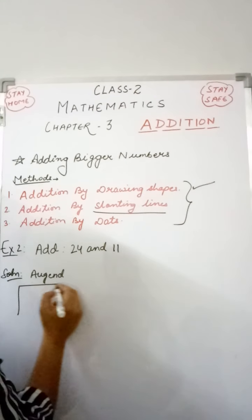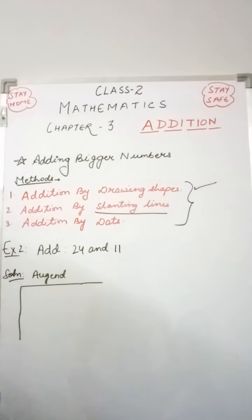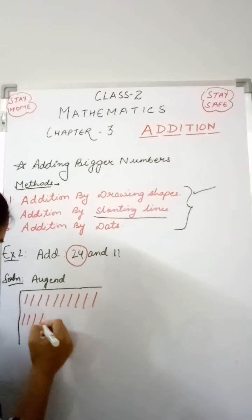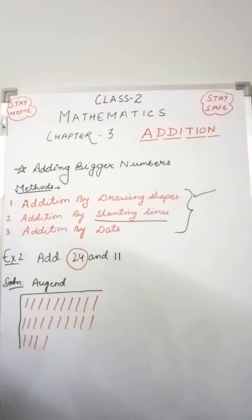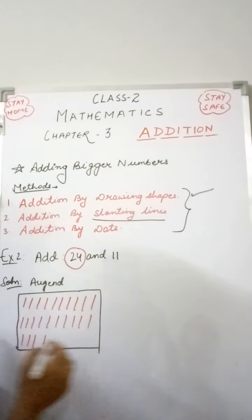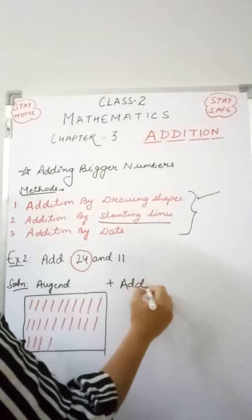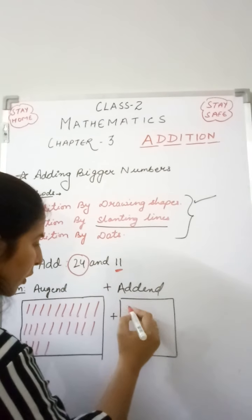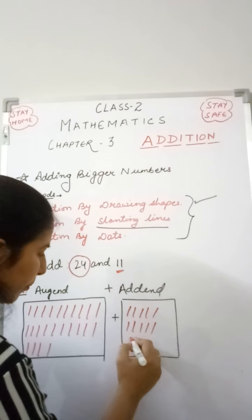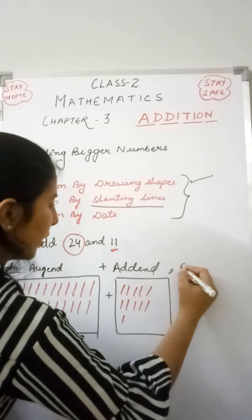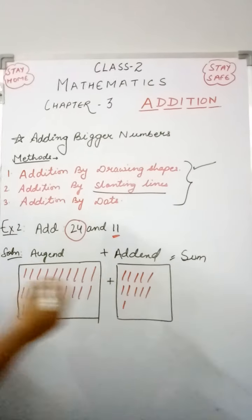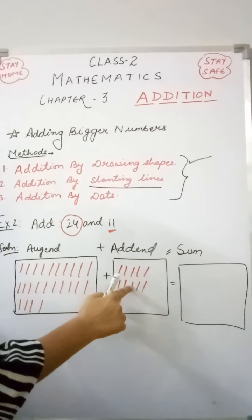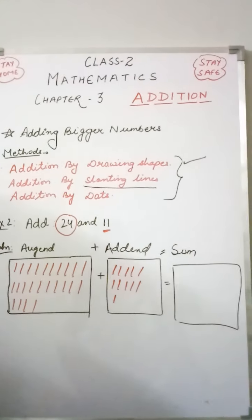Let's draw slanting lines for the Augend, which is 24. We draw 24 slanting lines — counting 1 through 24. Now the Addend is 11, so we draw 11 slanting lines for the second box — counting 1 through 11. Since Augend plus Addend equals Sum, let's find out the total: starting from 24, we count on: 25, 26, 27, 28, 29, 30, 31, 32, 33, 34, 35. So the total number of slanting lines is 35.